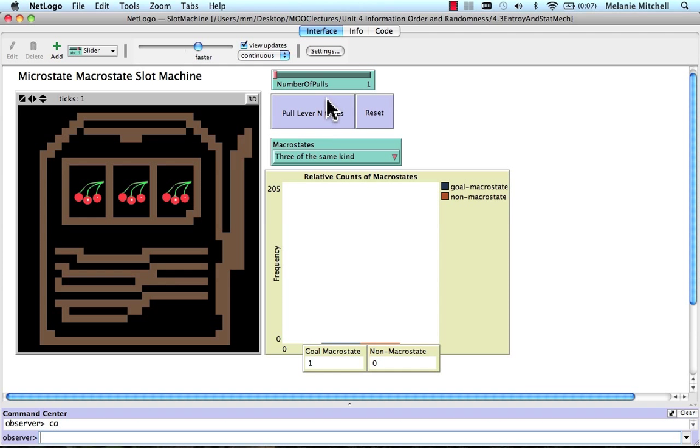Okay, so we can set the macrostate that we're interested in. I'm going to set it as three of the same kind. And I can ask, how many times will I be likely to see that in, say, 1,000 pulls?